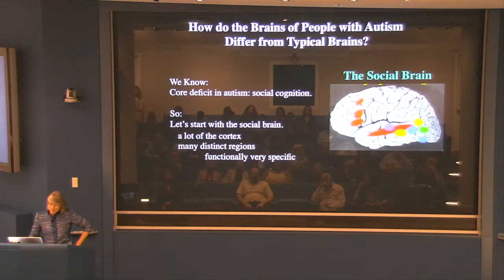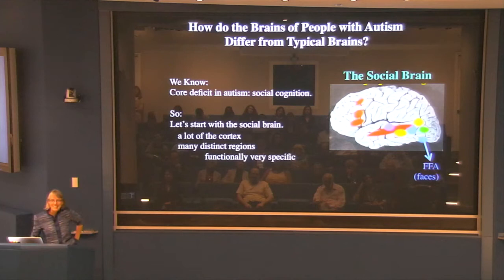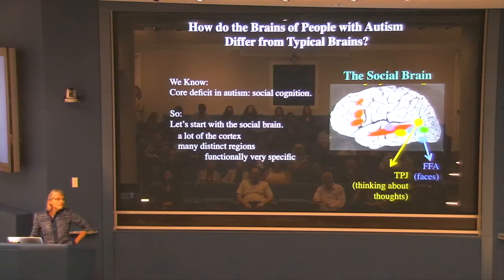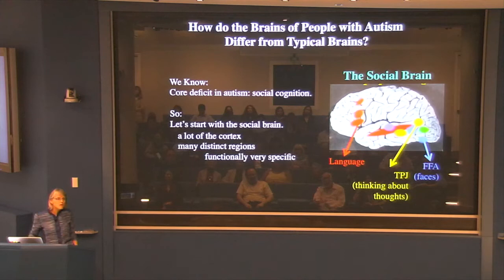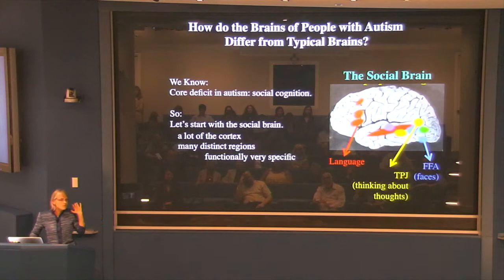I'll talk about some of those today. One we started working on about 15 years ago is the fusiform face area, which is underneath and not visible here, but that region is very selectively involved in processing faces. A region primarily the work of Rebecca Sachs — the TPJ shown in yellow — is quite selectively involved in thinking about what other people are thinking. And these red regions have been known to be involved in processing language for a long time.